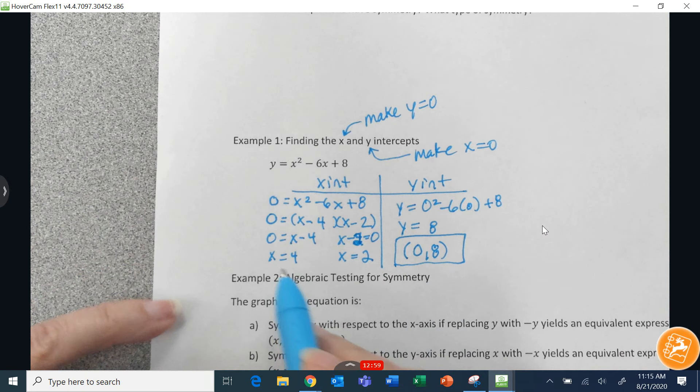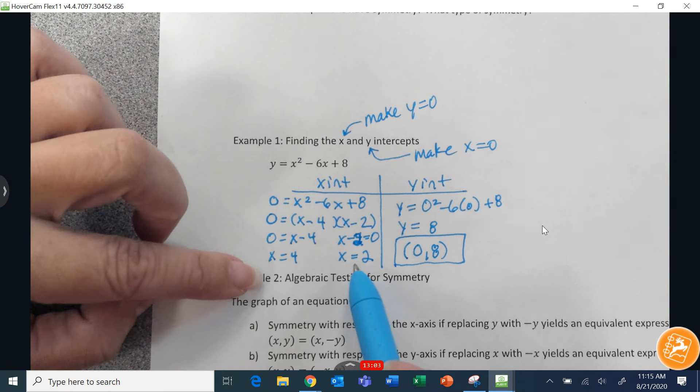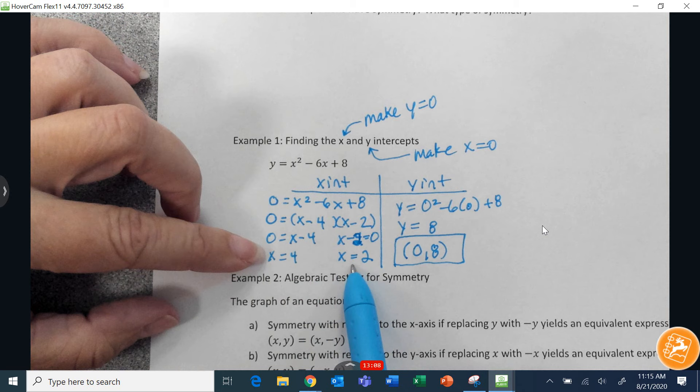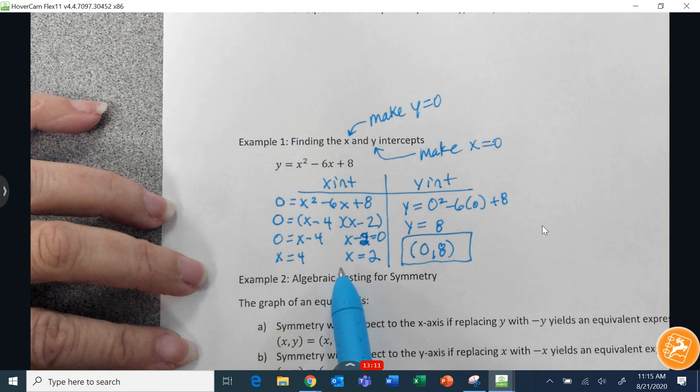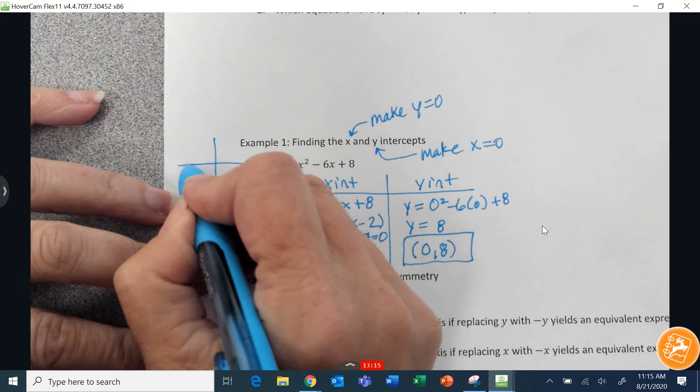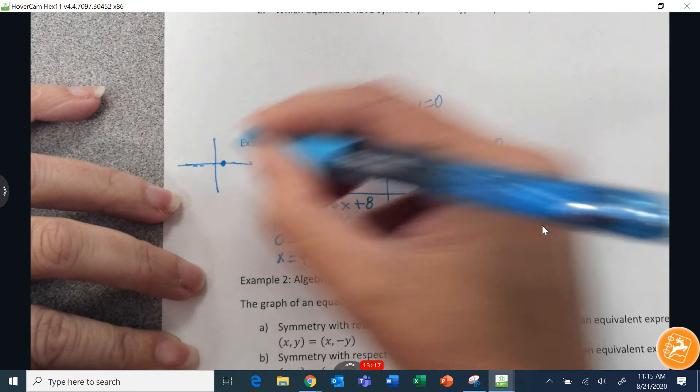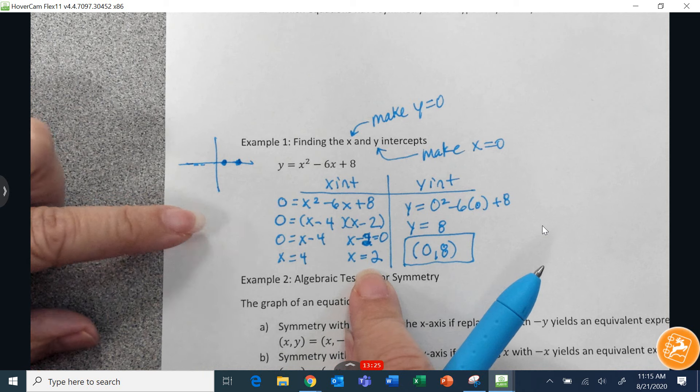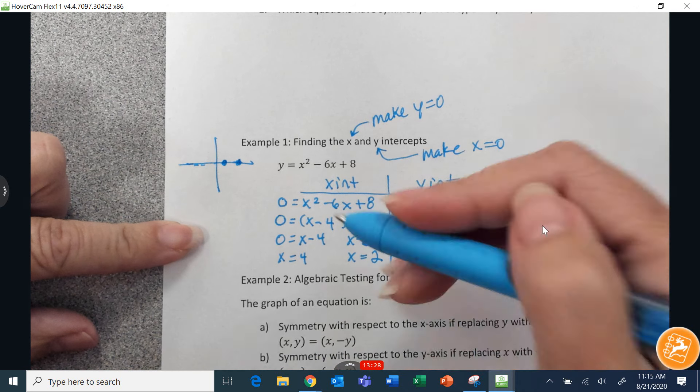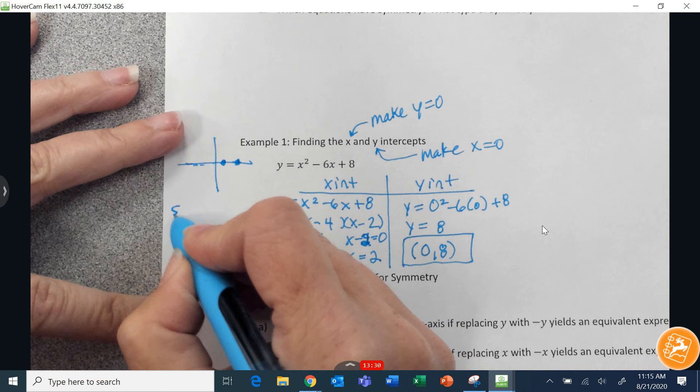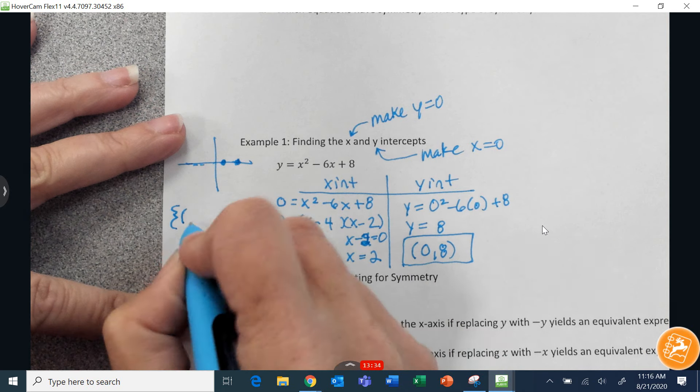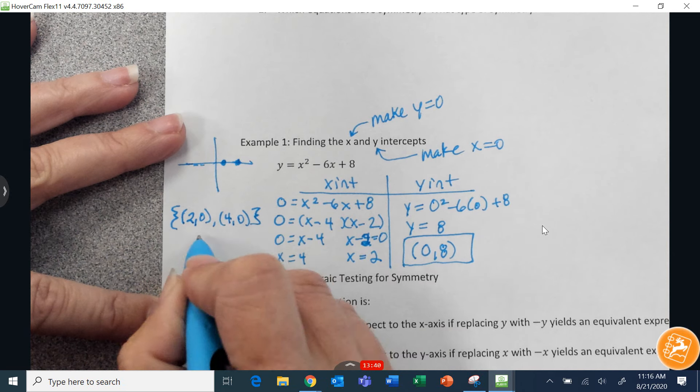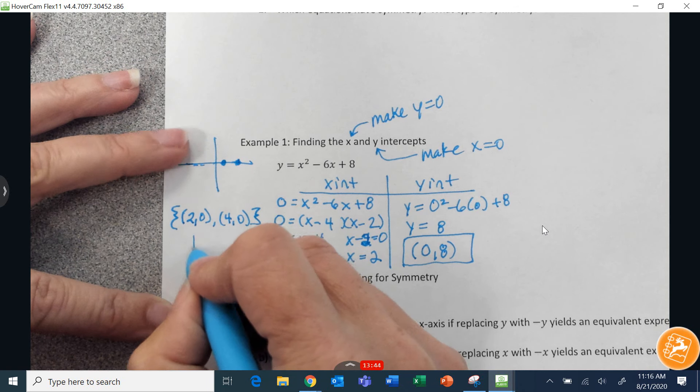Now, in reality, does it matter which one comes first? Probably not. But usually what I see is we will put them, if they were on a graph, from left to right. So if I've got one at 2 and another one at 4, I would write the x intercept at 2 first. Now, since we're typing these answers in Canvas, we want them all to be the same. So I am asking that you always put them in order. So you're going to type them in Canvas as 2, 0, then 4, 0. If you mix up the order, then it will mark it wrong in Canvas. So pay attention to the order.